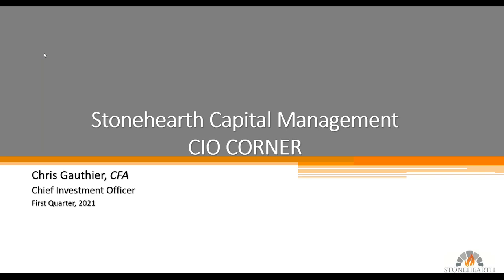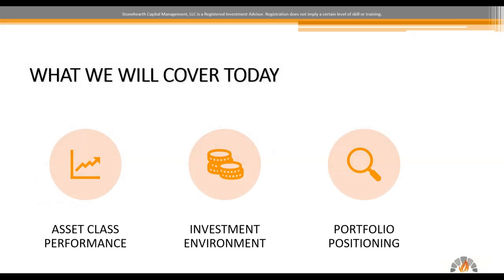Nice to see spring starting to emerge here in Northern New England. With the emergence of nicer weather and continued vaccine rollout, we'll start to see some semblance of return to normal regarding the devastating impact of COVID-19. What we'll talk about today is asset class performance history — it helps to know where you've been to know where you're going. We'll cover asset class performance over the past year and quarter, the current investment environment through our multiple lens approach looking at technical, macroeconomic, and fundamental evaluation factors, along with a qualitative aspect to find the signal through the noise, and finally portfolio positioning for 2021 and beyond.